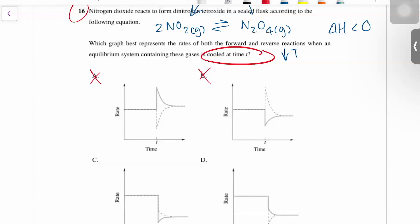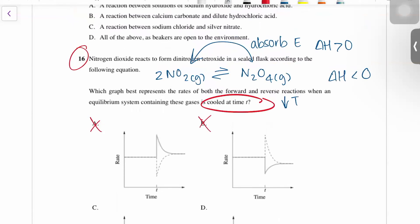So in this case, when the temperature goes down, the endothermic reaction's going to go down even more. And then if temperature goes up, the endothermic reaction's going to go up even more as well. So because the endothermic reaction is the reverse reaction, you should see the reverse reaction rate going down further.